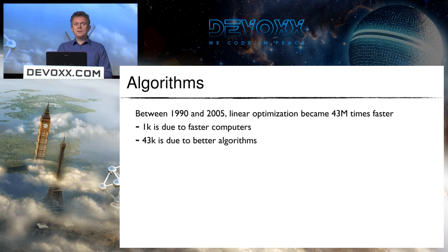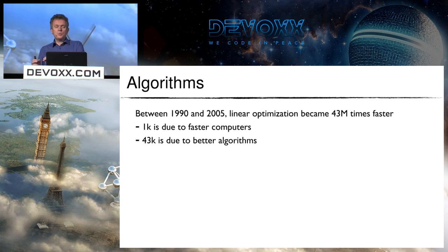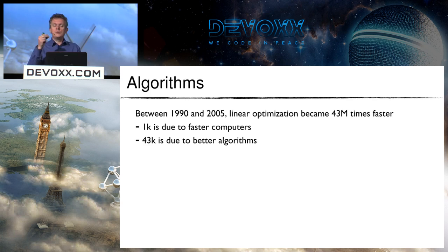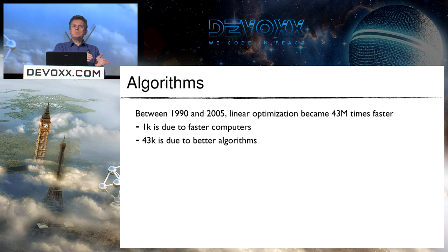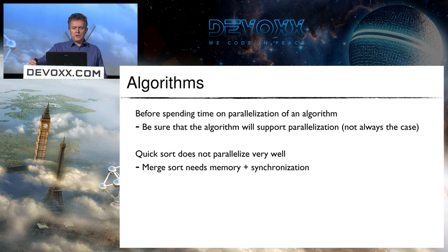This has nothing to do with parallelization — it's about algorithm optimization. Between 1990 and 2005, linear optimization became 43 million times faster. Of that factor, 1000× came from faster computers and 43,000× came from better algorithms. So before trying to go parallel, make sure the algorithm you're using is the right one.